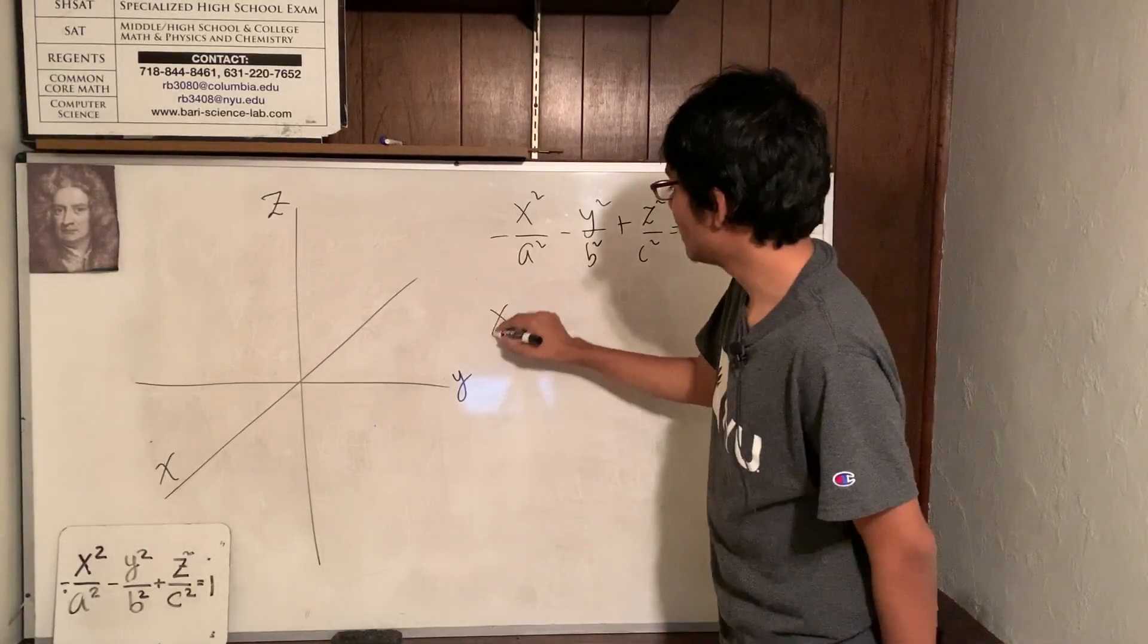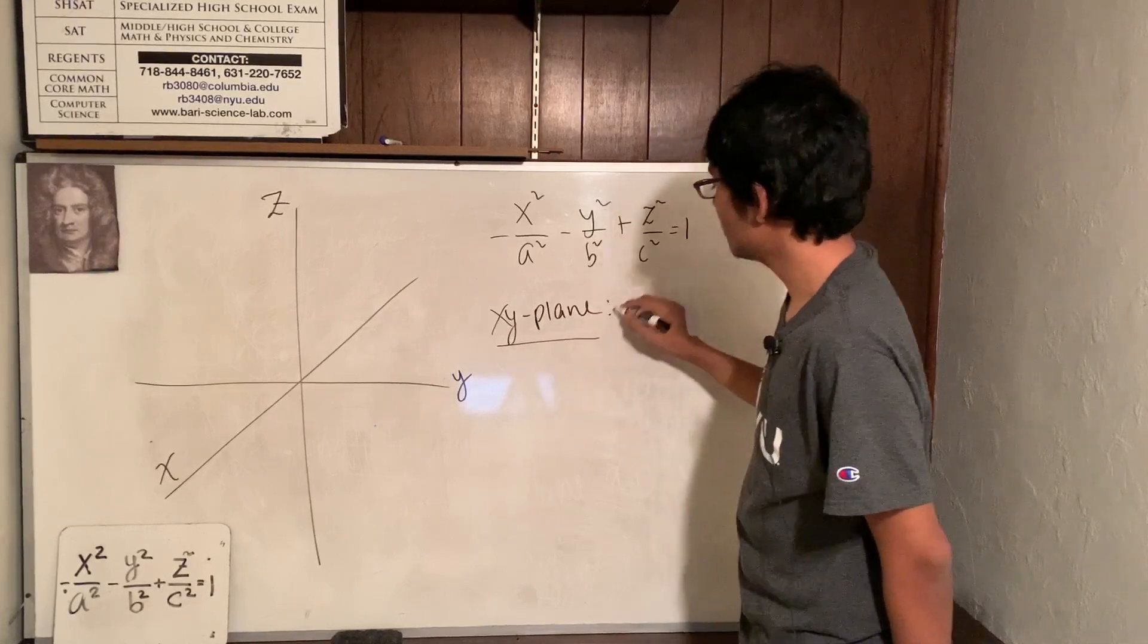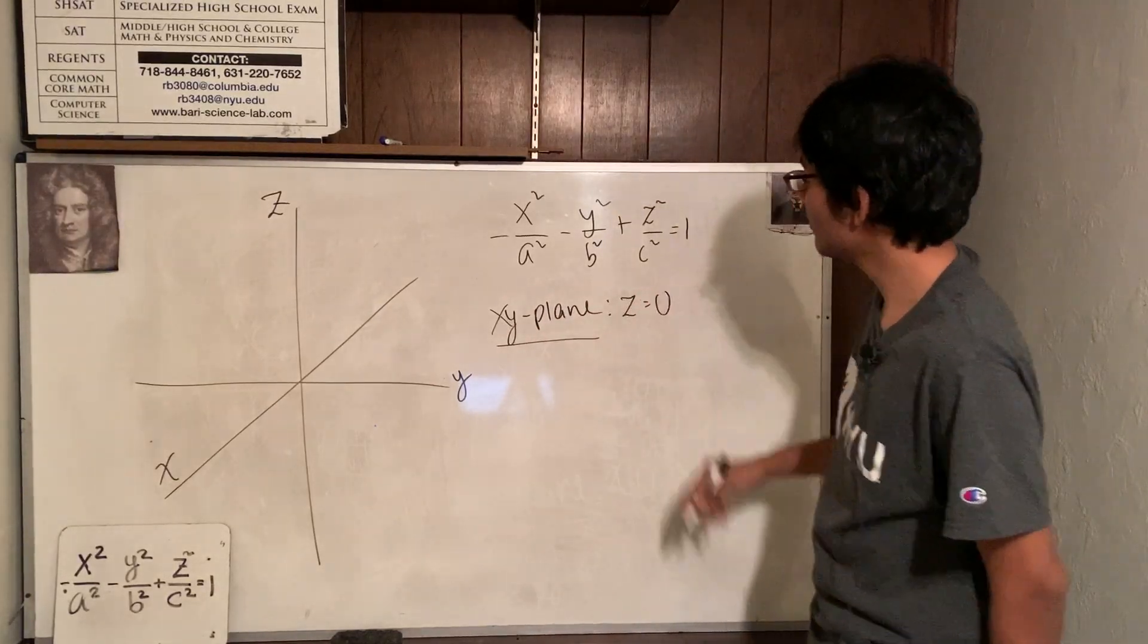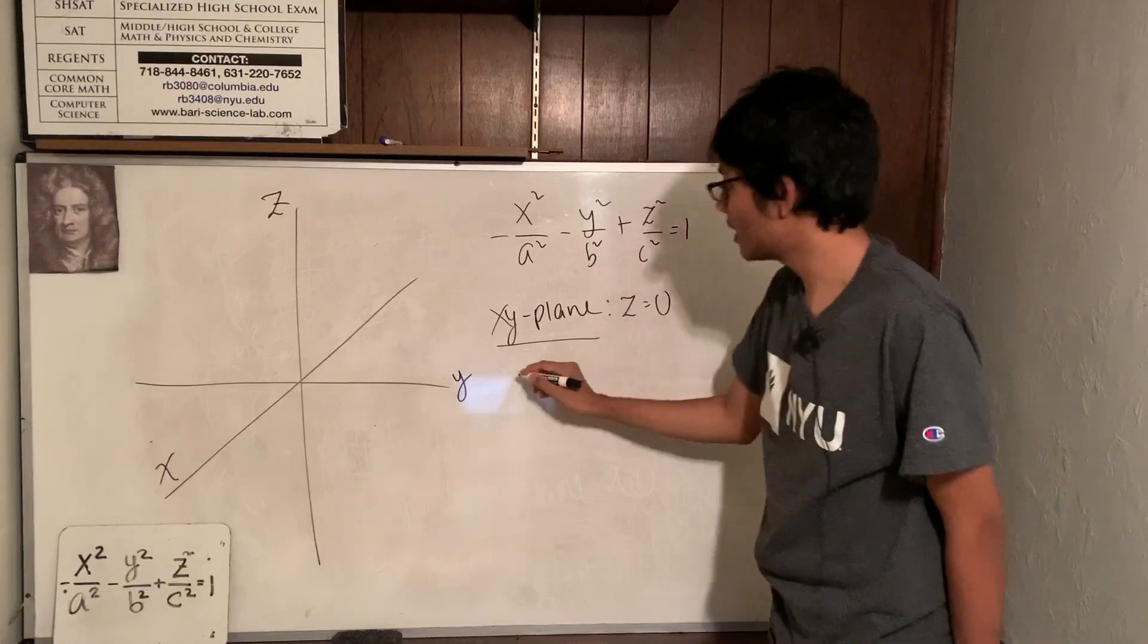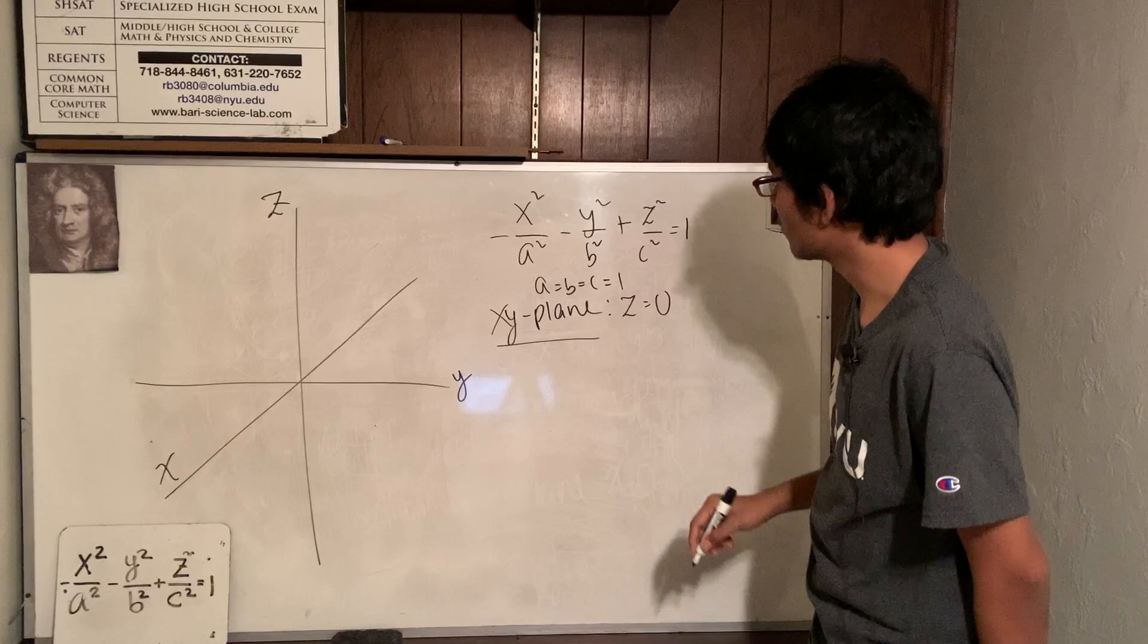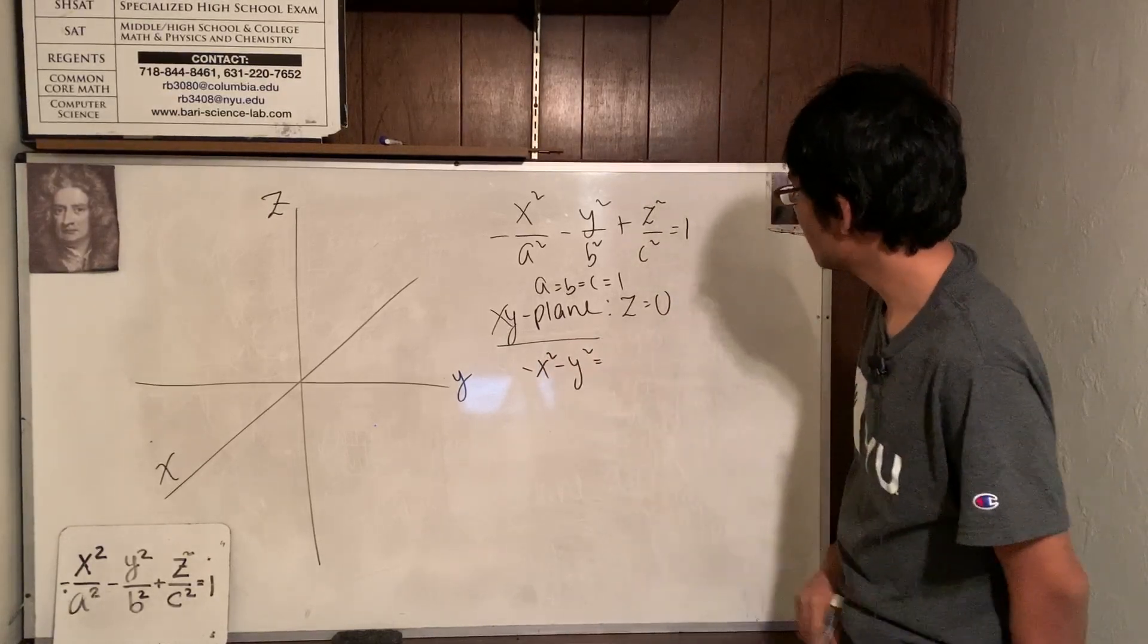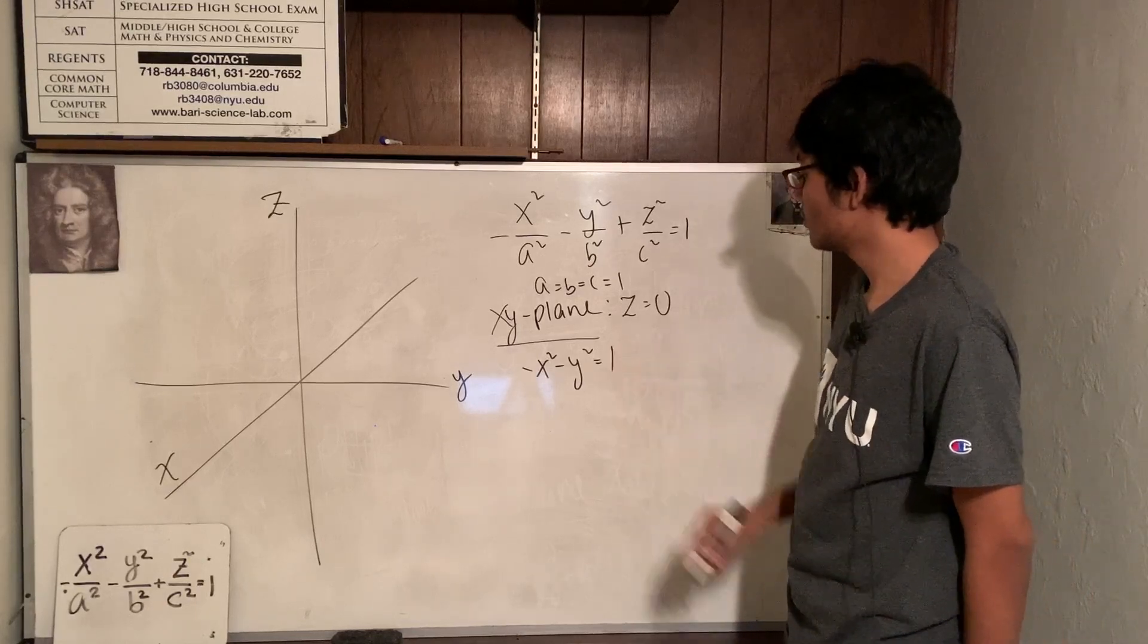Okay, so what does this look like on the x, y plane? Well, to answer that question, we fix z to be 0, take this term, pop it right out. And of course, let a, b, and c all equal 1, so that we end up with negative x squared minus y squared is equal to 1.